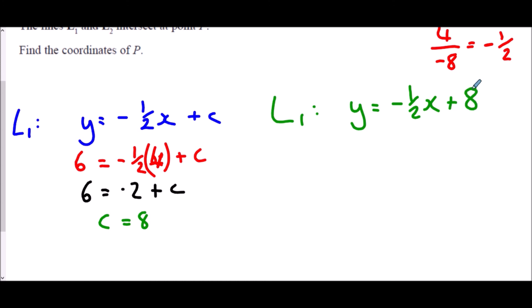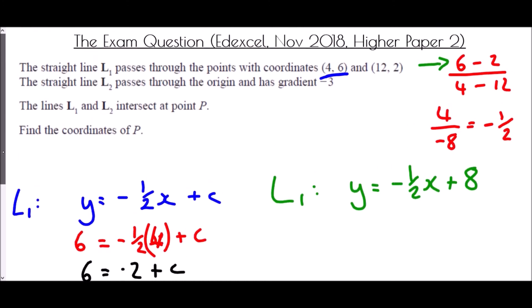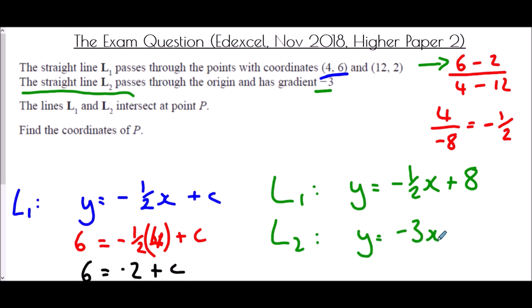For L2, there's no working out needed. We're told it has gradient -3 and passes through the origin — so the intercept is 0. Therefore L2 is simply y equals -3x.